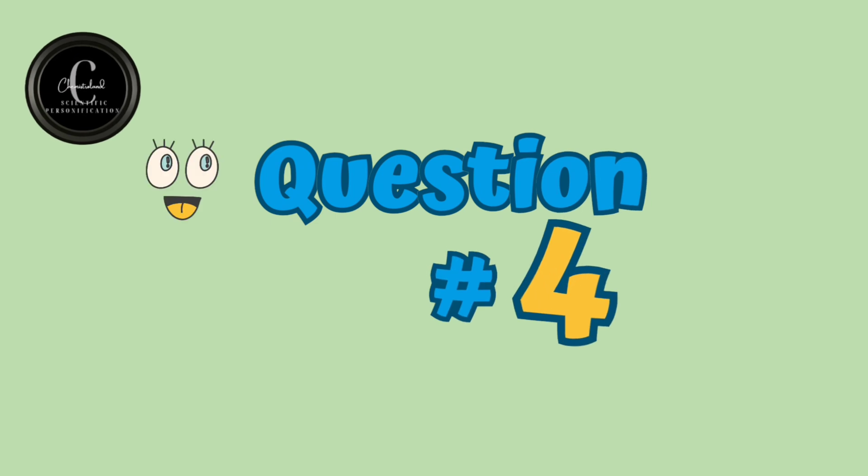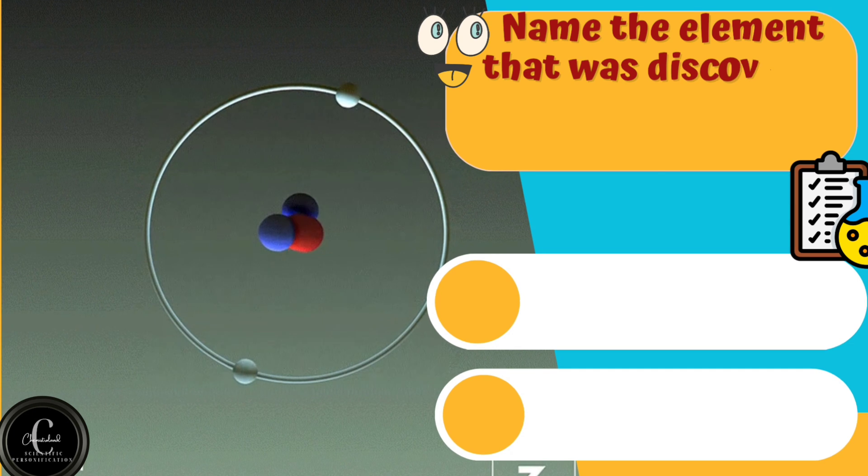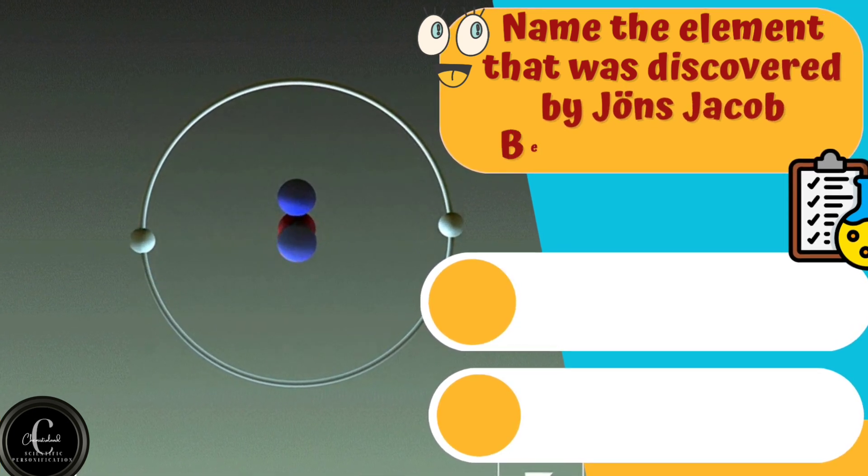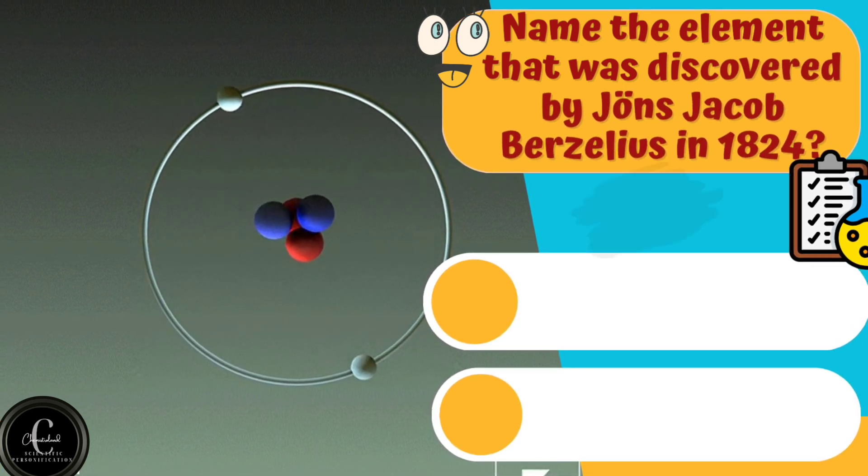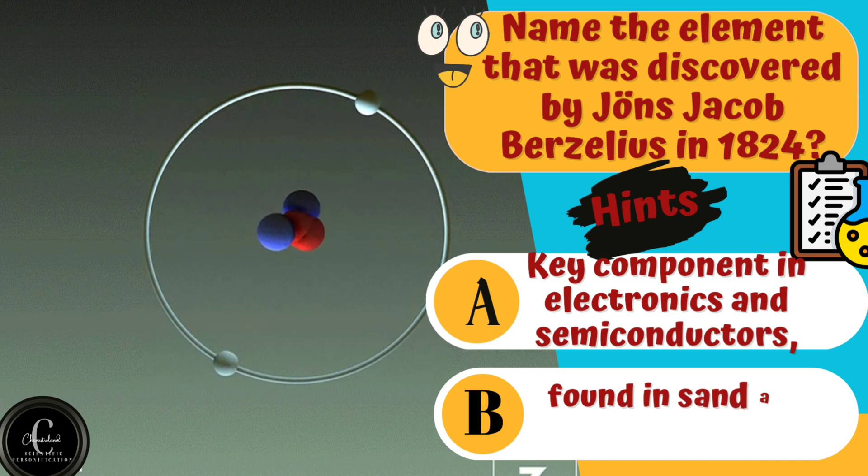What's your idea about this question? Name the element that was discovered by Jens Jacob Berzelius in 1824. Hints are A. Key component in electronics and semiconductors. B. Found in sand and quartz.